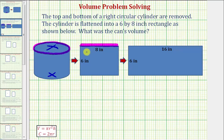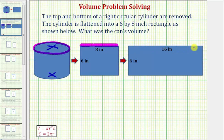If we were to slice this rectangle along this edge and unfold it, notice how it would give us a rectangle that is six inches by 16 inches. Because this rectangle had two layers, when we unfold it, this length would be twice as long, or 16 inches. Notice how this length of 16 inches would have to be equal to the circumference of the circle along the top of the right circular cylinder.